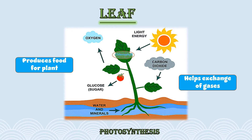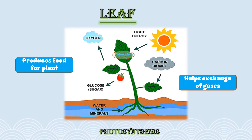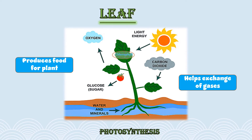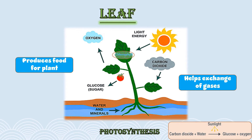During the process of photosynthesis, carbon dioxide, water, and sunlight undergo a reaction, and oxygen is released into the environment. Glucose is also formed, which serves as food for the plant. Plants use glucose for the growth of different plant parts. So basically, the leaf is taking care of the kitchen of the plant and preparing its food for growth.